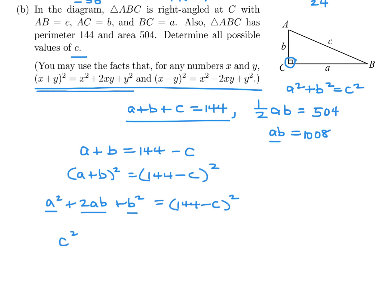So A plus B squared, well, on this side, it's going to be A squared plus 2AB plus B squared. And on this side, it's going to be, well, let's just keep it 144 minus C squared. I don't think we need to expand it. Well, A squared plus B squared, since this is a right angle right here, by definition, according to Pythagoras, is C squared. So this A squared plus B squared combines to C squared. And on this 2AB, well, we have AB, so 2AB is double that, so 2016.